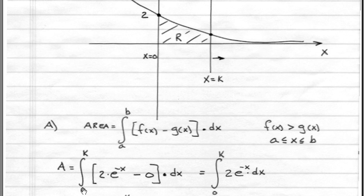A equals the integral from 0 to k of the first curve, which is 2 times e to the minus x minus 0, which is the x-axis, all times dx.